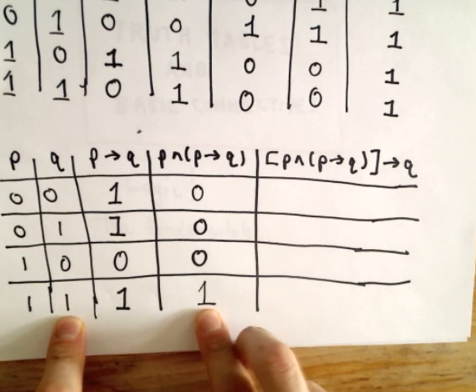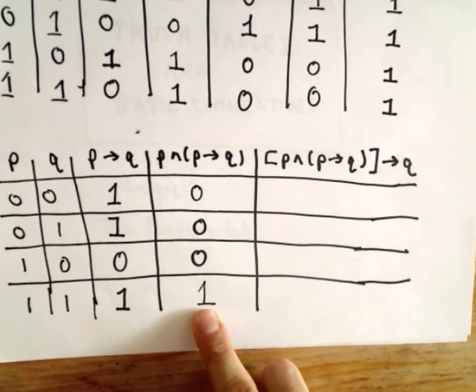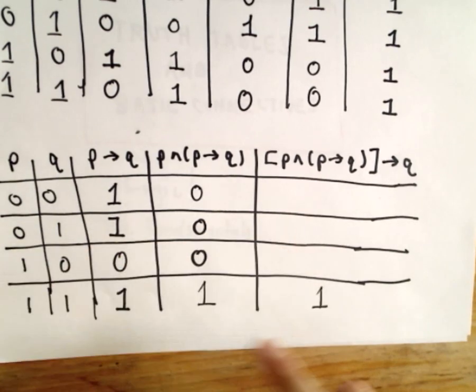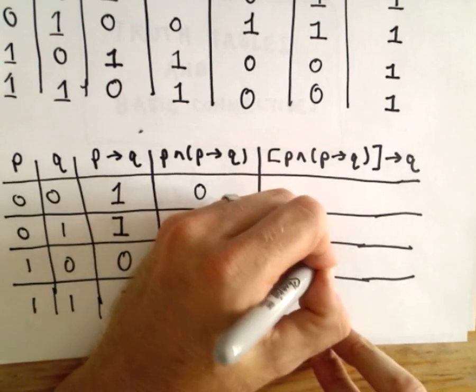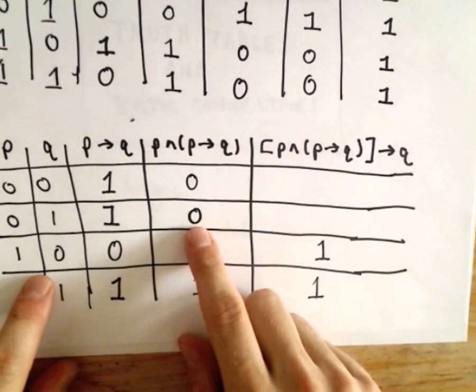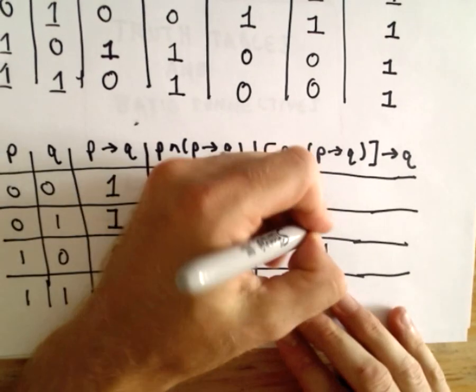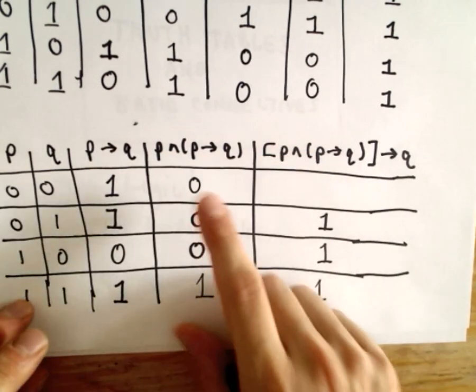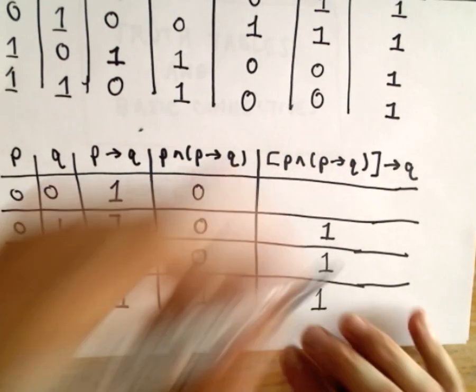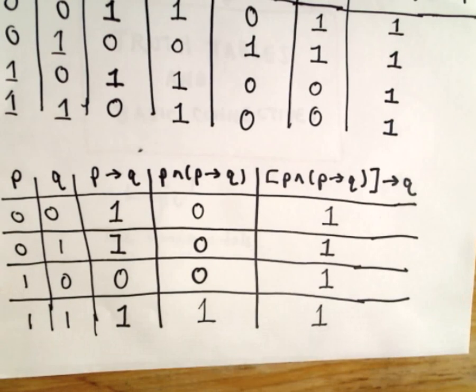Well, I don't see that anywhere. I see true implies true, so that's going to be true. I see false implies false, that's considered true. I see false implies true, again, that's considered to be true. And likewise, I see false implies false, so that is also considered true.